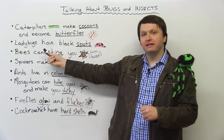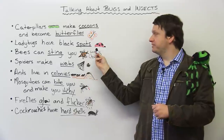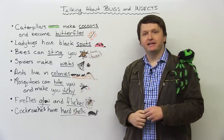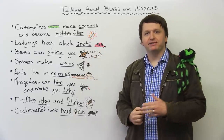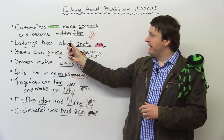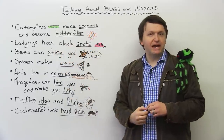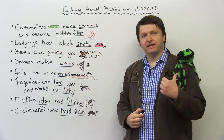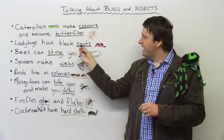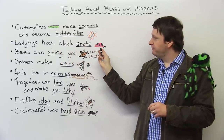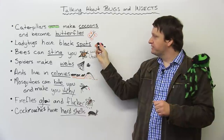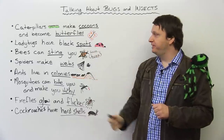Next, we have ladybugs. Here is a picture of a ladybug. Steve has dated many ladybugs in his life. And ladybugs have black spots. I think it's the black spots that attract him the most. So they have black spots — here's a red ladybug with some black spots on it.